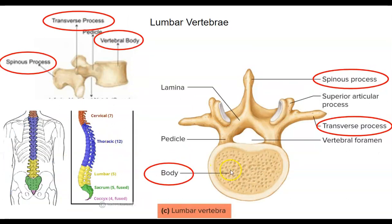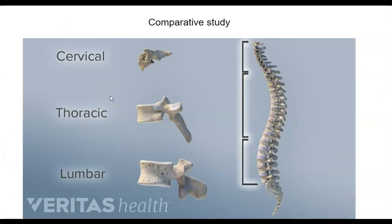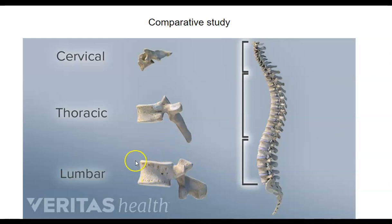Lumbar vertebrae are really no different — we still have the body, the transverse process, and the spinous process. When comparing the three types: cervical vertebrae are smaller, with a small vertebral body and very stubby transverse processes. Thoracic vertebrae have a larger body, and their spinous process projects both posteriorly and inferiorly. Lumbar vertebrae have the largest vertebral body, and their spinous process is wide and largely just projects posteriorly, without the inferior slant of the thoracic vertebrae.